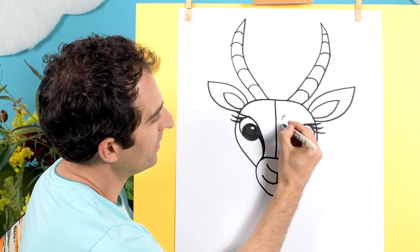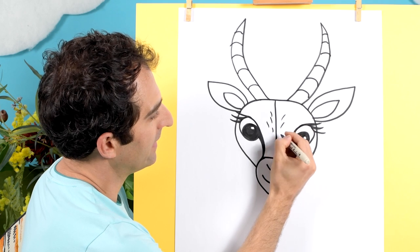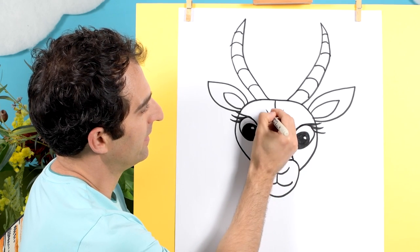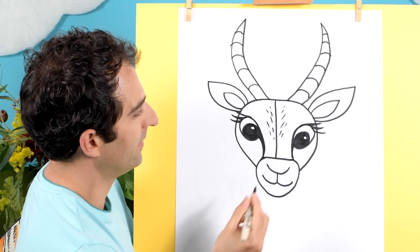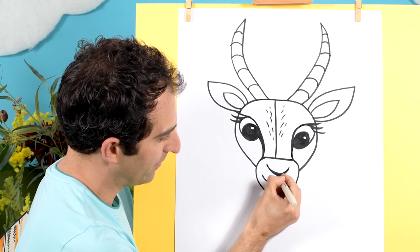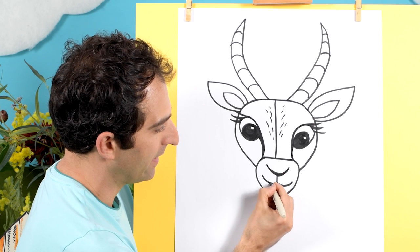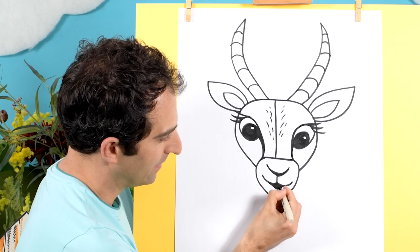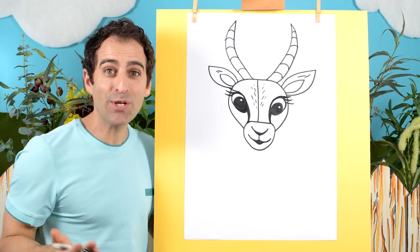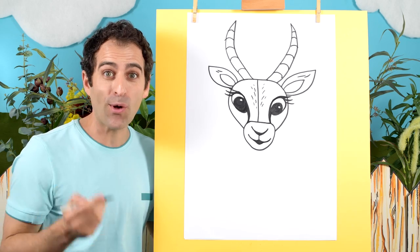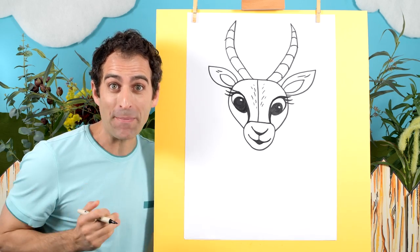And if you like, you can add some lines in here to show a bit of the fur or the hair on our impala. And maybe a little bit thicker, the bottom of the nose here, and also the mouth. And there we go. We've turned our I into an impala. I think it's time to add some color. So I'll go fast now, and then we can come back and see how it finished up.